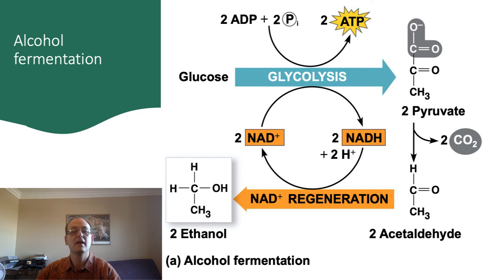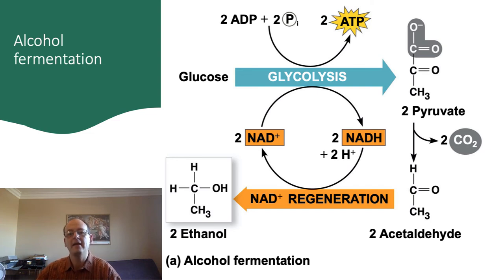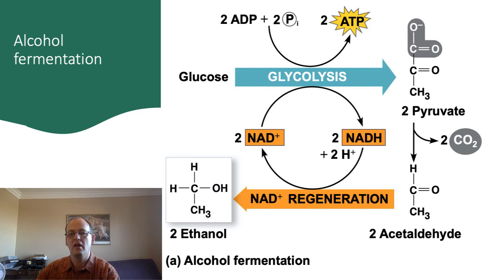Alcohol fermentation is very similar to lactic acid fermentation and is carried out primarily by bacteria and yeast. The pyruvate is converted over two steps into ethanol instead of lactate. The acetaldehyde acts as the electron acceptor, and it is converted into ethanol. Notice that in alcohol fermentation, carbon dioxide is produced from the pyruvate — this is the carbon dioxide that makes bread rise and makes beer have a head. However, one of the effects of the loss of that carbon dioxide is that the process of converting pyruvate to ethanol can't be reversed, like lactate being converted back into pyruvate.